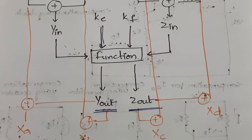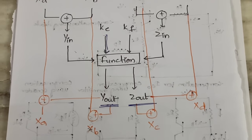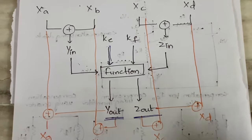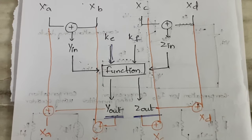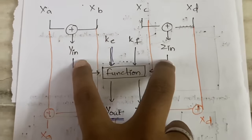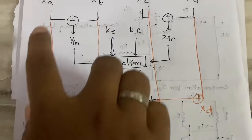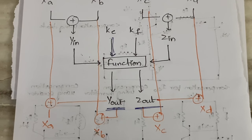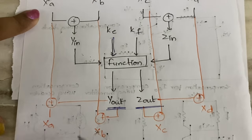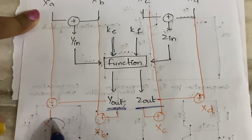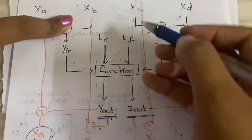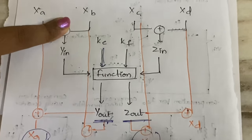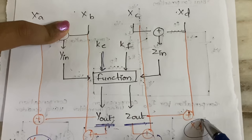Looking at the diagram — ignoring the orange lines first, just the black lines — Xa and Xb are XOR-ed together to form Yin, and Xc and Xd are XOR-ed together to form Zin. These are fed into the function with two keys to produce Yout and Zout. Then, the orange lines show: Xa XOR Yout gives new Xa, Xb XOR Yout gives new Xb, Xc XOR Zout gives new Xc, and Xd XOR Zout gives new Xd.